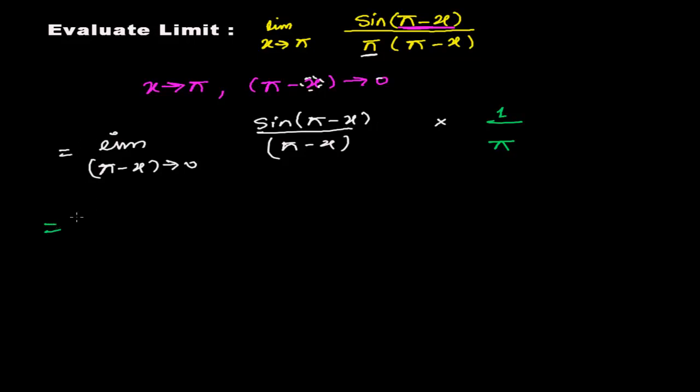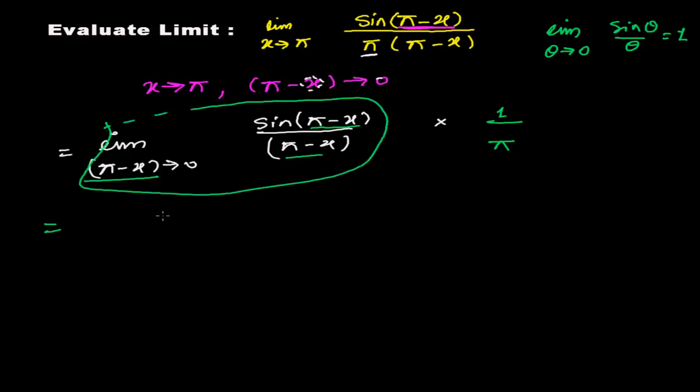You're getting the standard form because limit when angle tends to zero, sine of the angle over the angle equals to one. So here π-x is your angle. Therefore, when angle tends to zero, angle divided by the angle, this whole quantity turns to one. And one times one by π, so finally your answer is one over π.